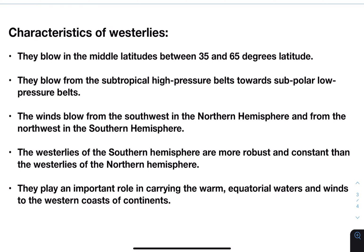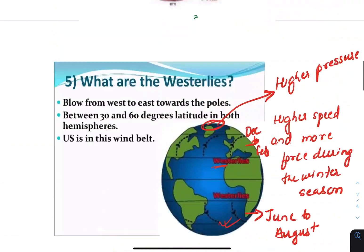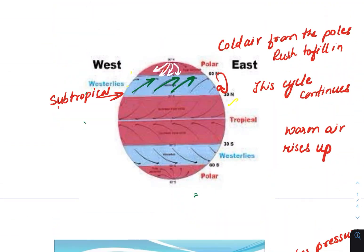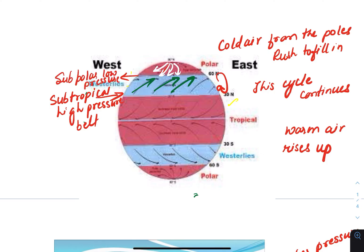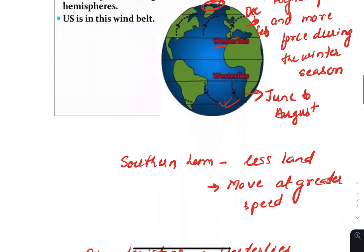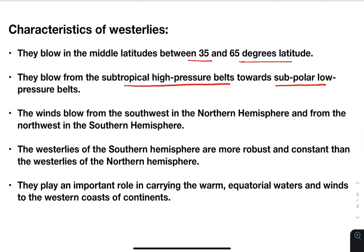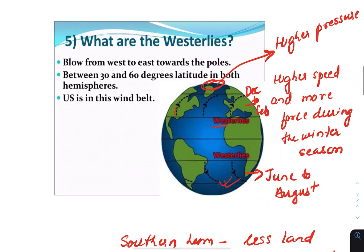Characteristics of westerlies: They blow in the middle latitudes, between 35 and 65 degrees latitude. They blow from the subtropical high-pressure belts towards sub-polar low-pressure belts. The winds blow from the southwest in the Northern Hemisphere and from the northwest in the Southern Hemisphere. The westerlies of the Southern Hemisphere are more robust and constant than those of the Northern Hemisphere.